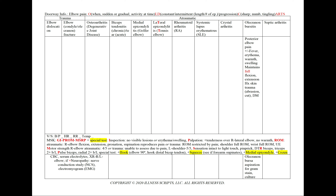In olecranon bursitis, we'll see posterior elbow pain. We can note a fever, and in our inspection and palpation — erythema, warmth, and swelling. The key defining characteristic versus septic arthritis is that in olecranon bursitis we're maintaining full flexion and extension, because the elbow joint itself is not involved — it's mainly the bursa behind it. We can also note a history of skin trauma, abrasions, cuts, and diabetes. We'll order an olecranon bursa aspiration for gram stain and culture.